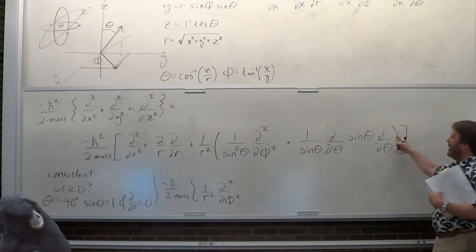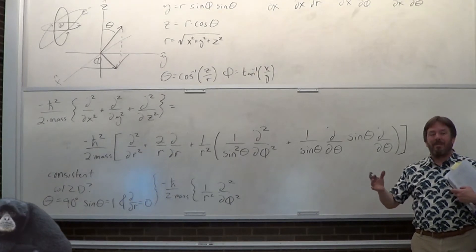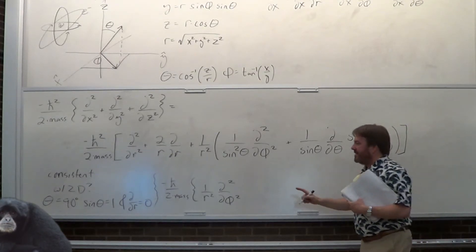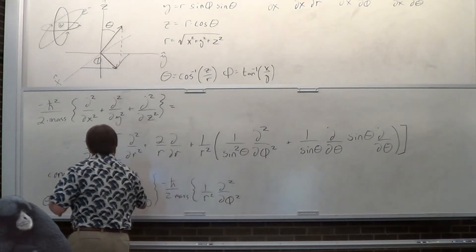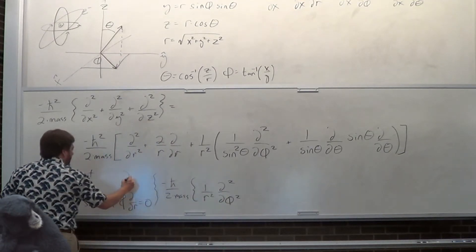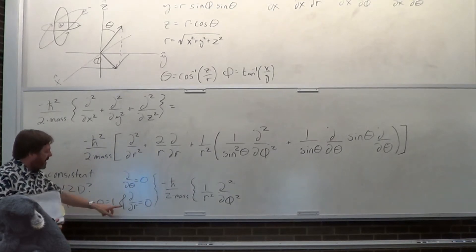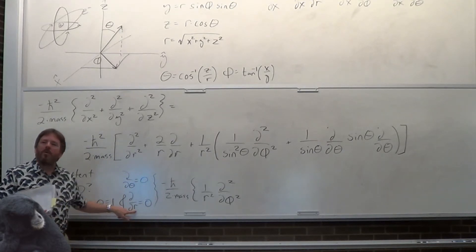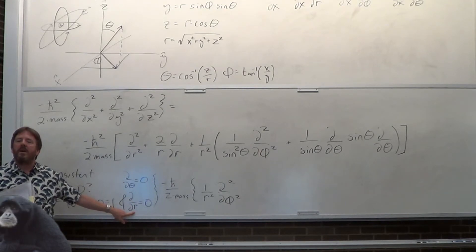The wave function in theta is also a constant because theta is always fixed at 90 degrees — just like the R is constant, theta is constant. The derivative of a constant is zero, so this gets wiped out too.